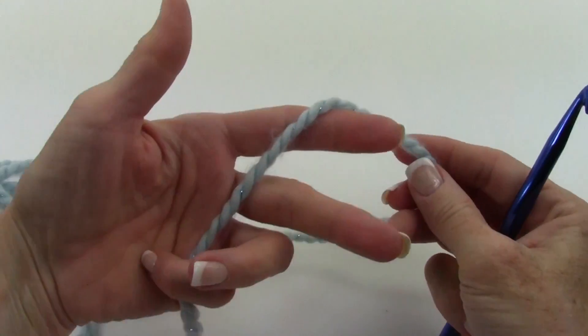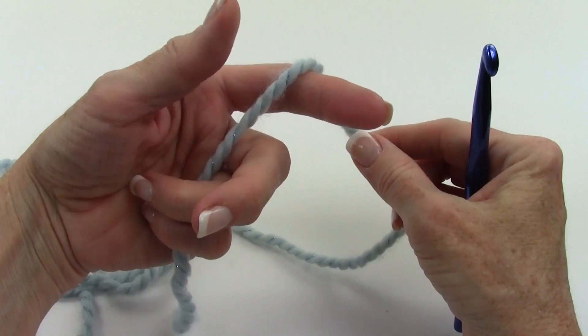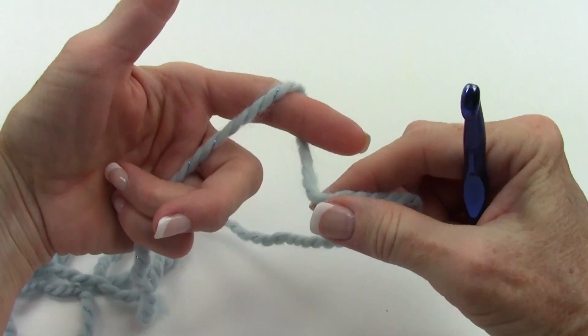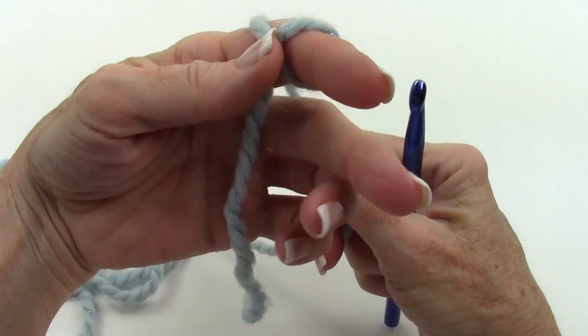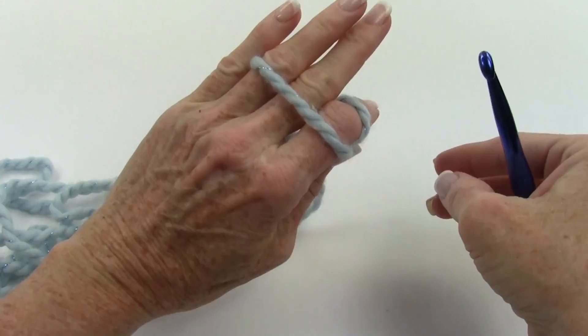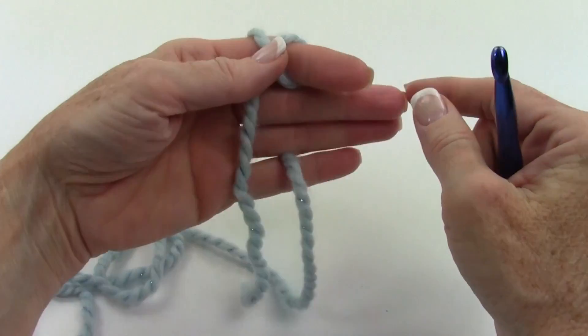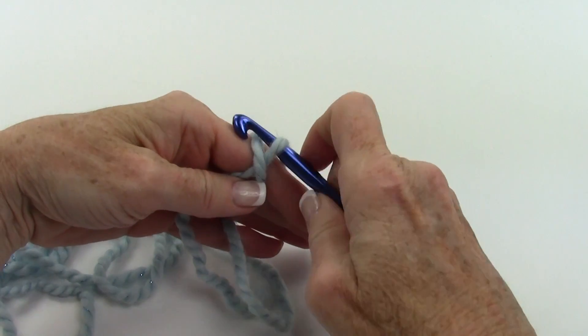You lay this across, your yarn across, wrap this clockwise, come back here, I'm going to hold it on the back of my hand right here. Then I'm going to go under this first strand.